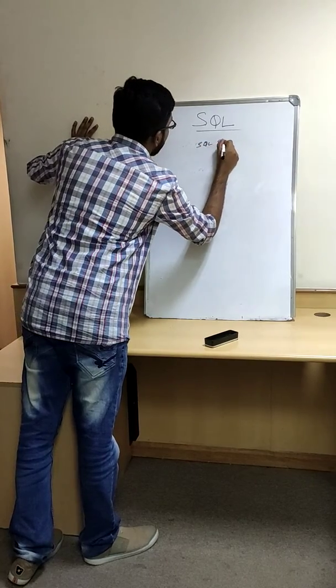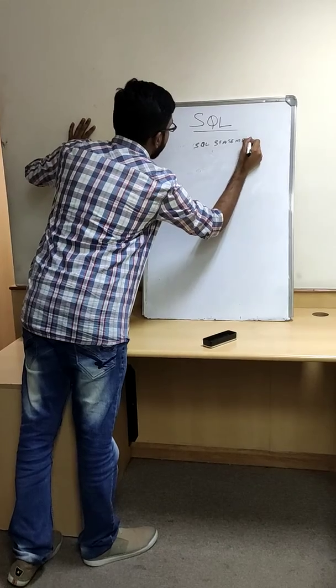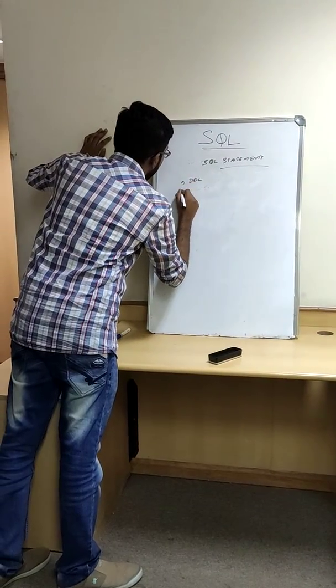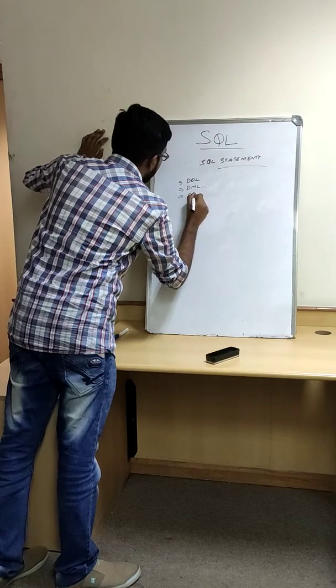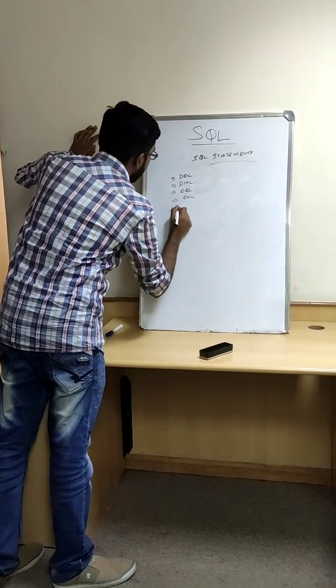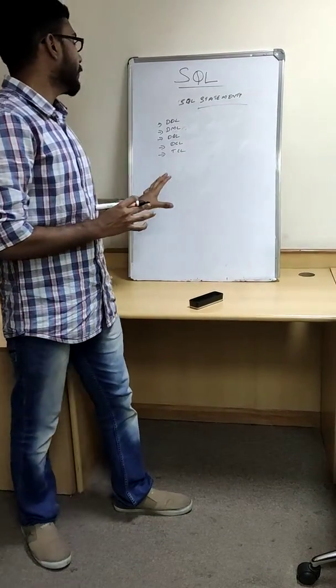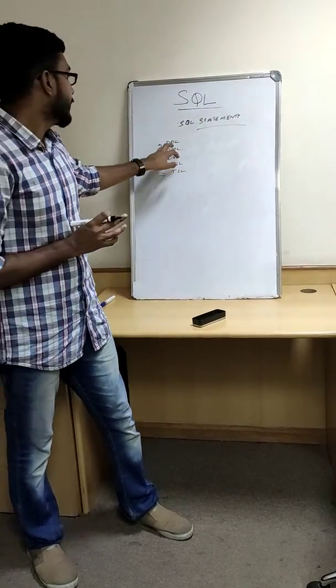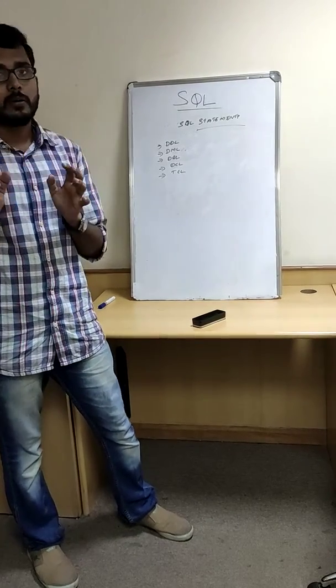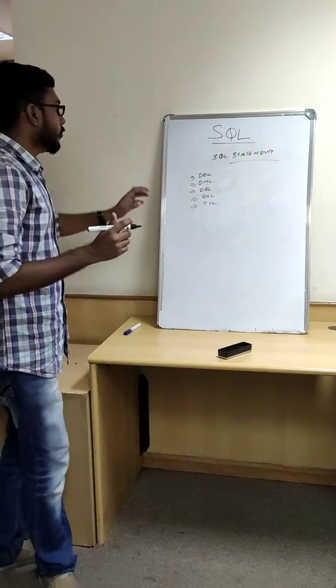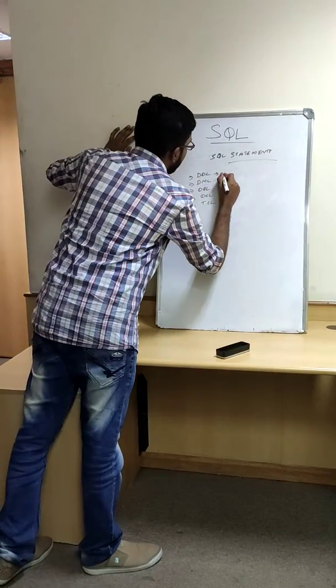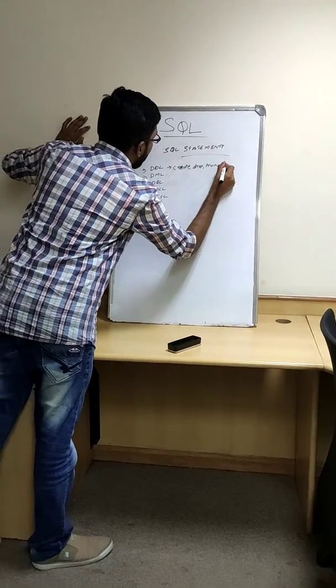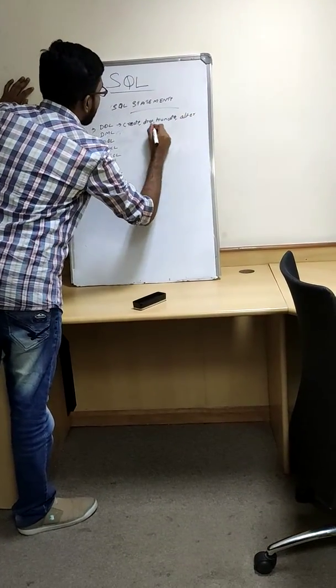Now, SQL statements. There are mainly five SQL statements. First one is DDL, then DML, then DQL, then DCL, then TCL. These are the five main statements which we need to know in SQL. First one, DDL, data definition language, which will play a crucial role to build the structure of a table. It contains create, drop, truncate, alter, and rename.